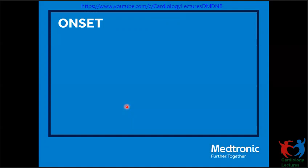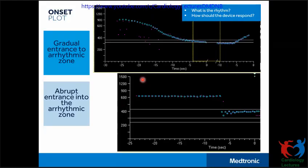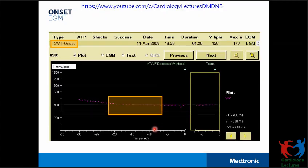Moving on to the Onset discriminator. Looking at the plot diagram, one rhythm begins gradually whereas a second rhythm begins abruptly. The onset feature prevents detection of sinus tachycardia as VT by evaluating the acceleration of the ventricular rate. If the ventricular rate increases gradually, as seen during sinus tachycardia, the device classifies the rhythm as SVT due to onset. In this example, the rate is accelerating gradually into the VT zone, so the device detected this as gradual onset, withheld therapy, and the type shown is 'SVT Onset.'